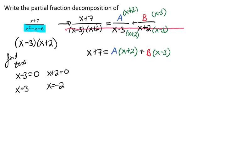So that leaves us with x plus 7 equals a times x plus 2 plus b times x minus 3. And this is where we start to get a little simpler and do this simpler method.